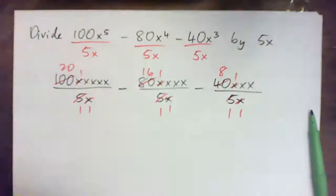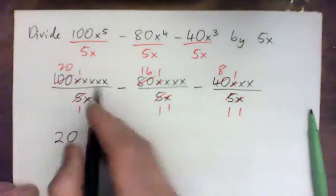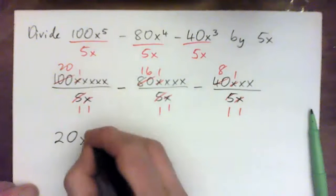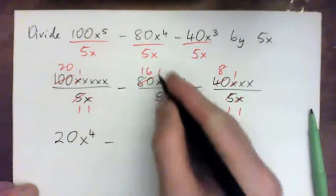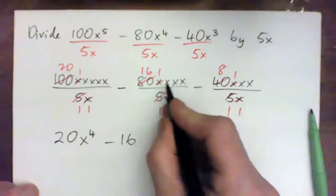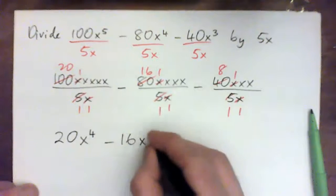And so we have a 20, and then 1, 2, 3, 4 x's here, which is x to the power of 4. And then we have a 16, and then 1, 2, 3 x's, x to the power of 3.